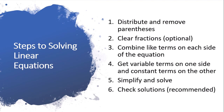The first step will always be to distribute and remove the parentheses. The second step is clearing fractions. The third step is to combine like terms on each side of the equation. Step four, get the variable terms on one side and constant terms on the other. Then simplify and solve.